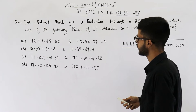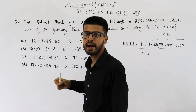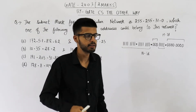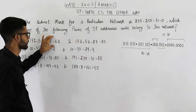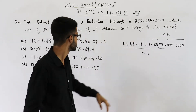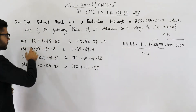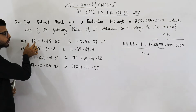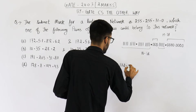Option A is 172.57.88.62. If you AND any IP address with the subnet mask, you will get to know the network ID to which this IP address belongs. So perform AND of the given IP address with the subnet mask. All 8 bits are ones in the first octet, so when you AND it with 172, you are going to get 172 only. So it will be 172.57.